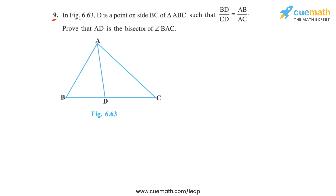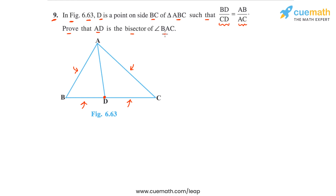Question 9 of this exercise says: in figure 6.63, D is a point on side BC of triangle ABC such that BD/CD is equal to AB/AC. So D is a point on BC such that BD/CD equals AB/AC, which means AD divides BC in the same ratio as AB to AC. We have to prove that AD is the bisector of angle BAC.